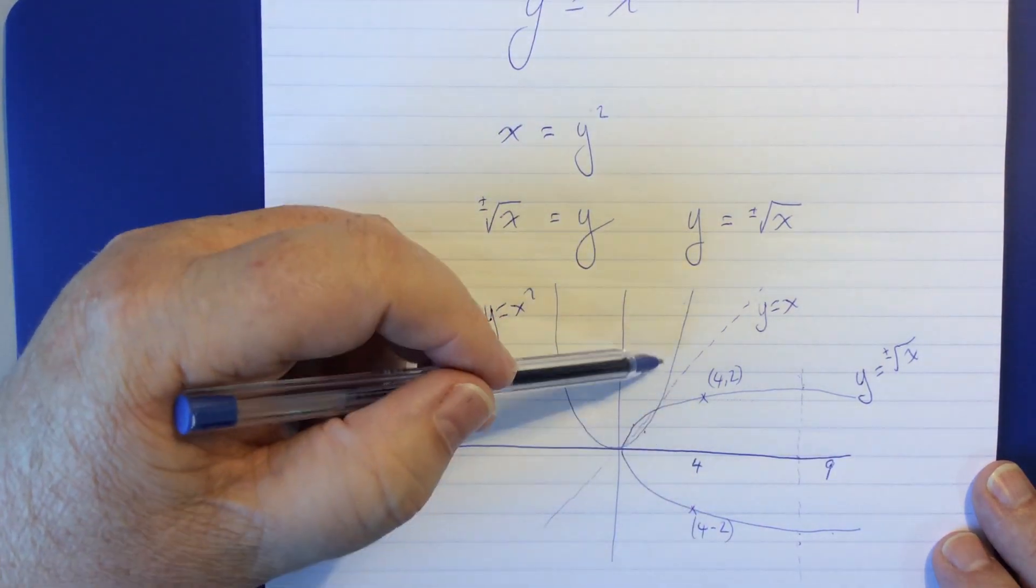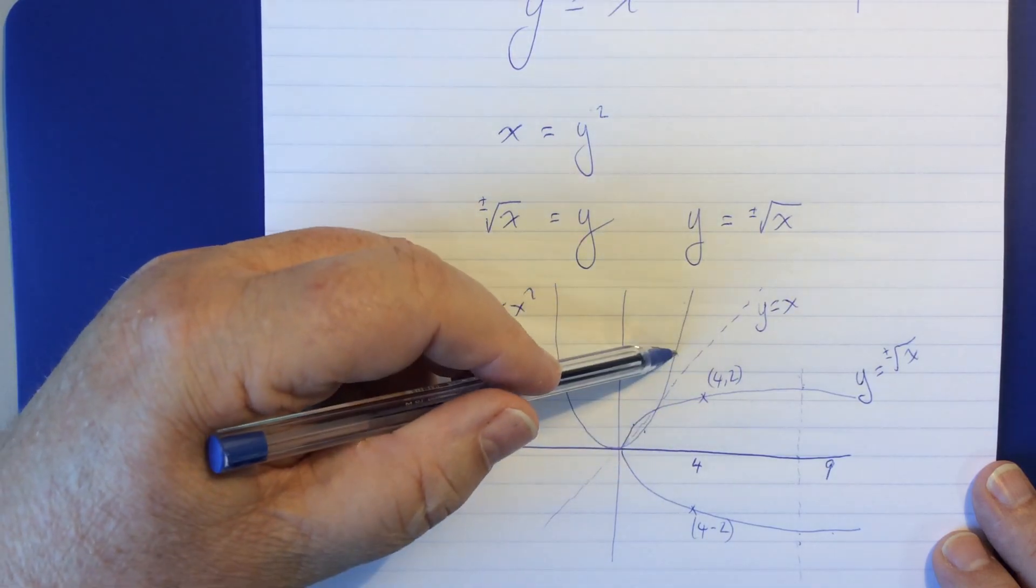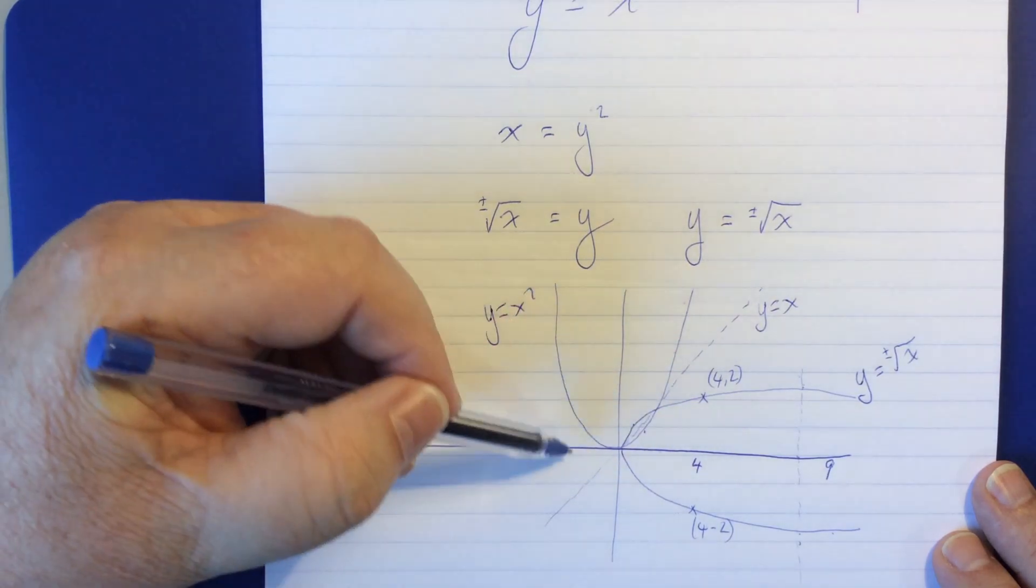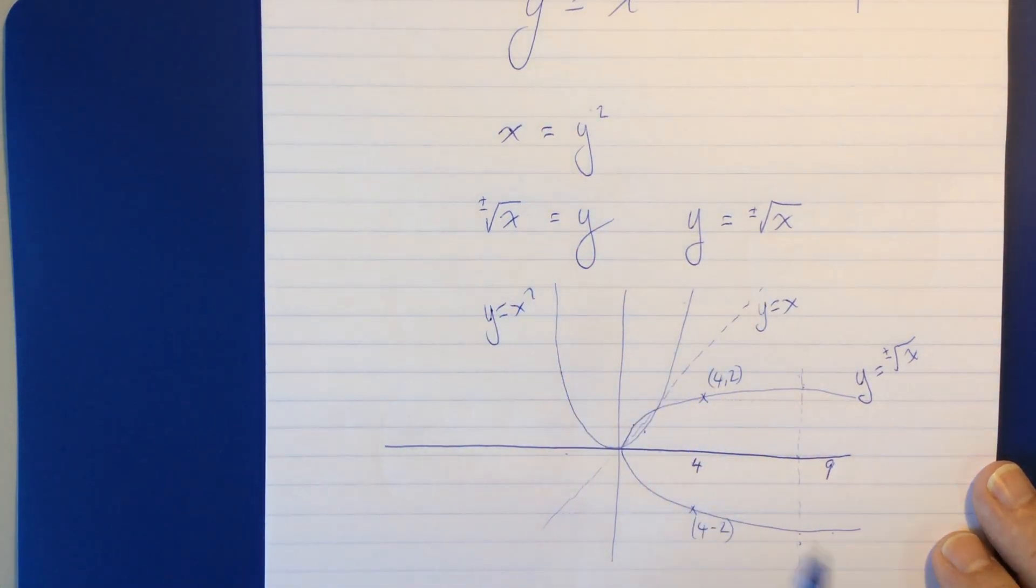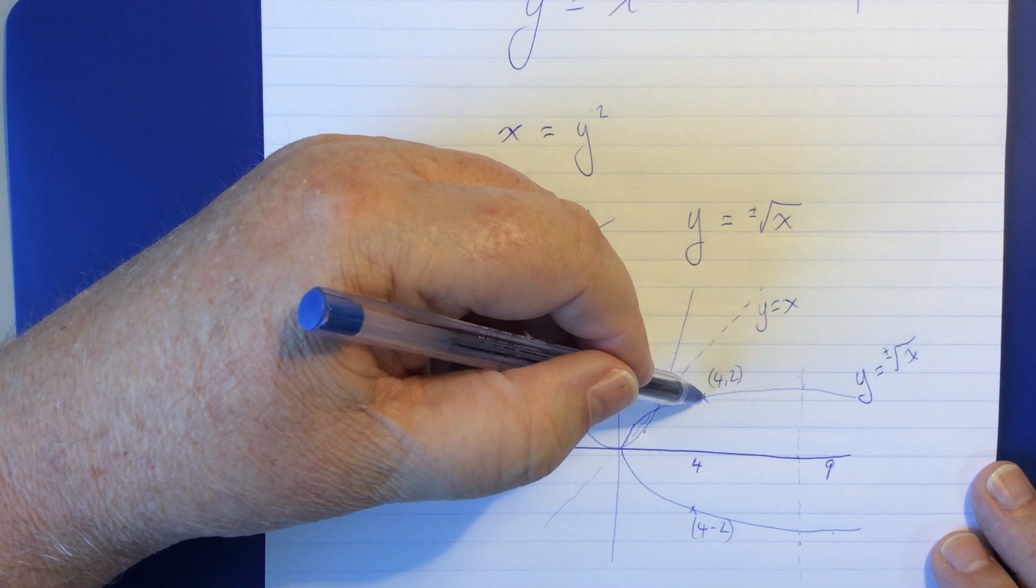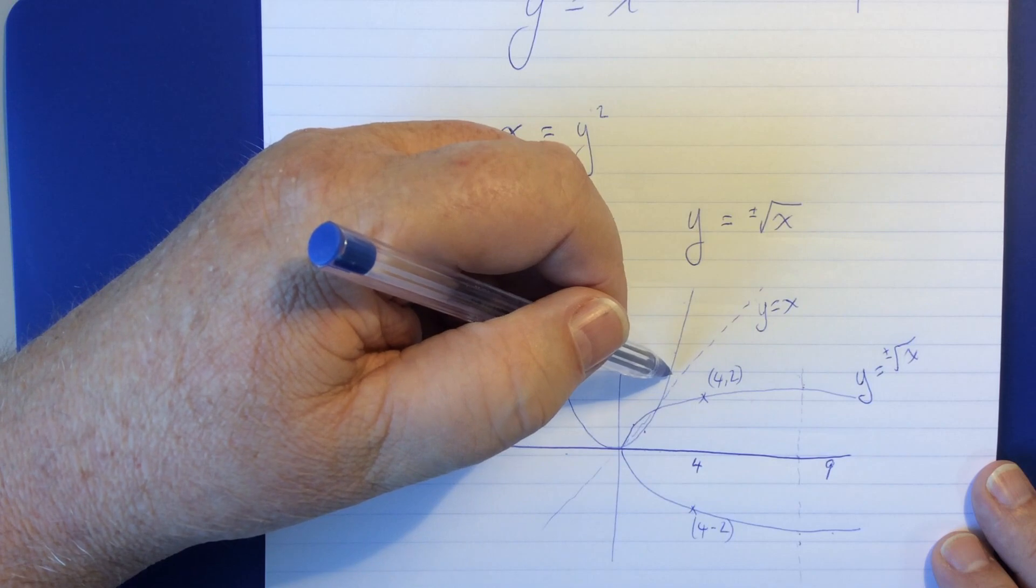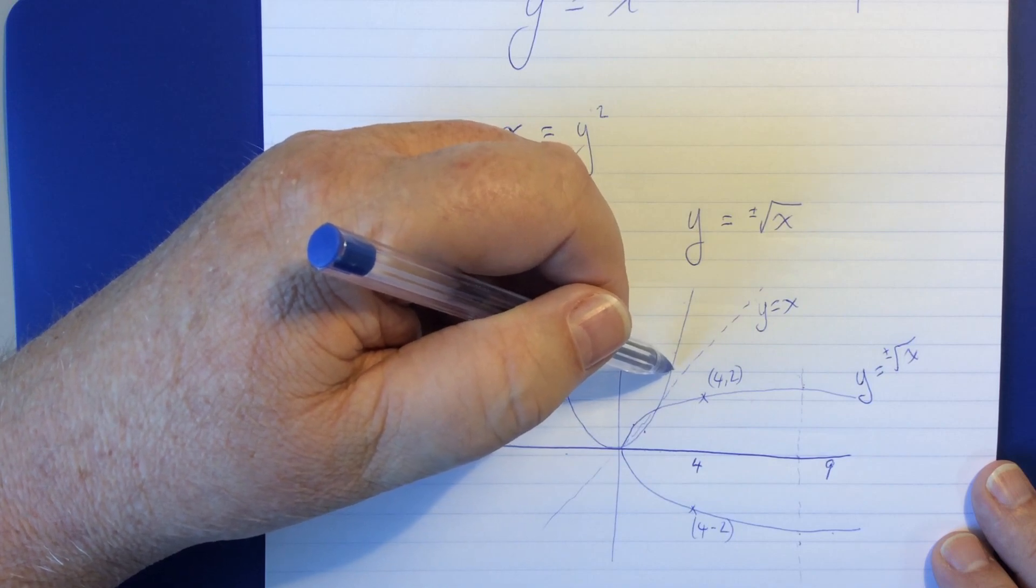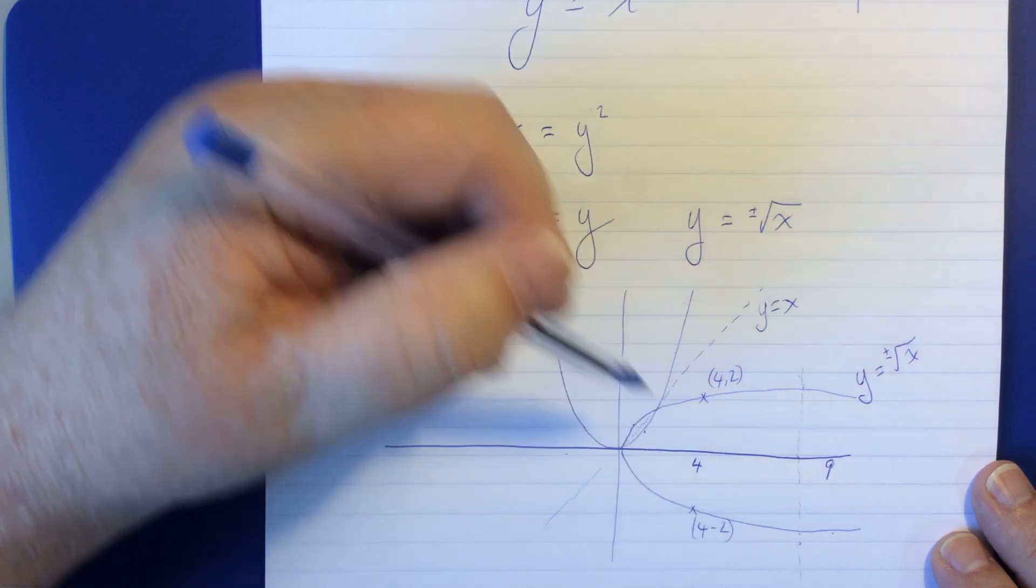Now, if we were to do this on this function, we would have 2, 4 and negative 2, 4. So, what you see is, which is typical of an inverse, is that the points have swapped position. So, what was 2, 4 has become 4, negative 2.